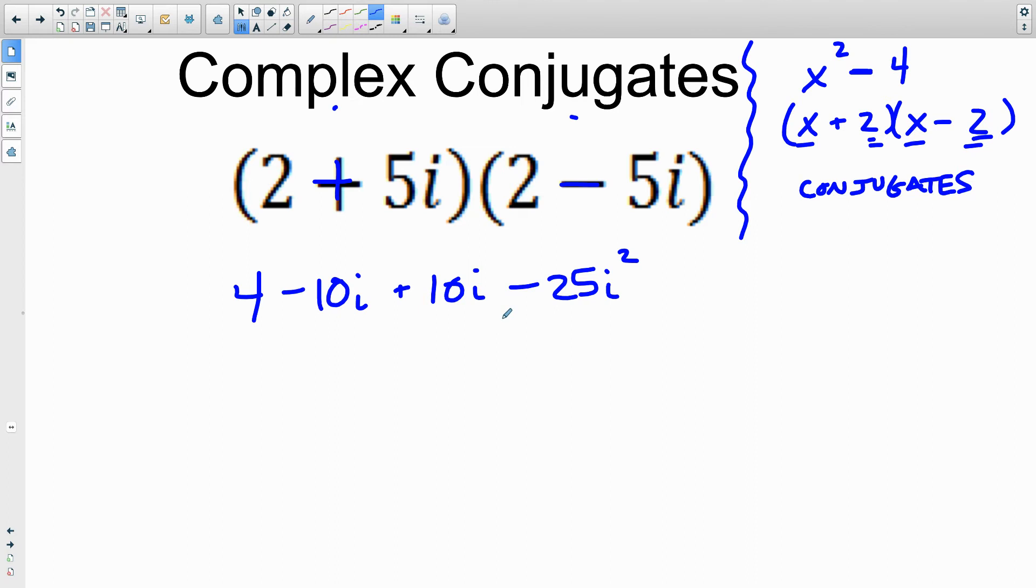Now what happens? We talked about this in a previous video in terms of multiplying complex numbers together. We said that i squared has a value of negative 1. So now this problem is 4 minus 10i plus 10i minus 25 times negative 1, which means this entire term becomes a positive 25, and we have a 4.